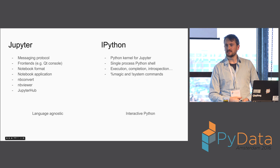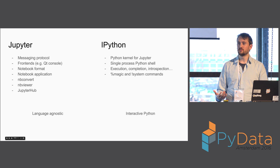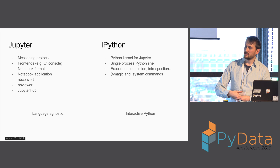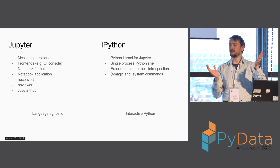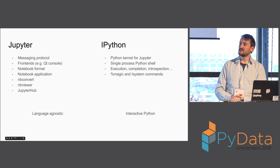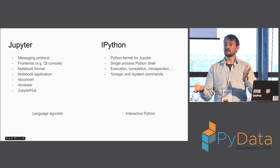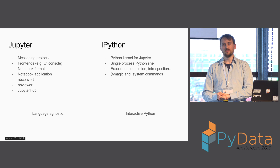All the stuff that's Jupyter-specific — deploying notebook servers, the notebook document format, the messaging protocol — there's actually nothing Python-specific about any of these things. When you're executing, it's just: here's some code, you need to say what language it is for the highlighting, but there's nothing Python about 'here's a string of text, run it, produce some output.' Similarly, the outputs are just a representation of some output — it doesn't matter what language the code was that ran it.